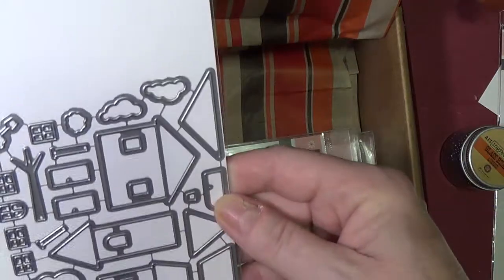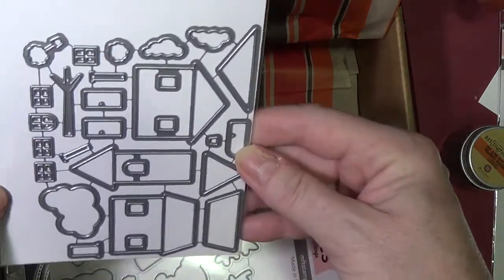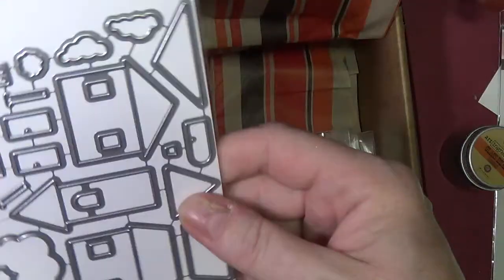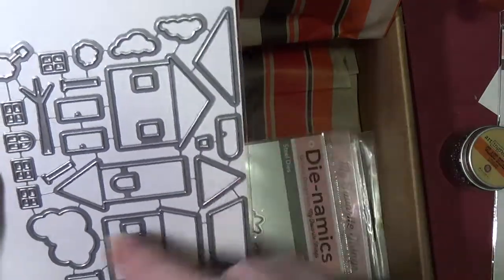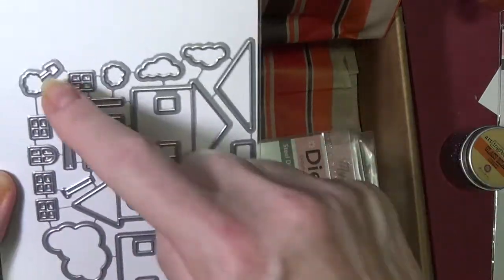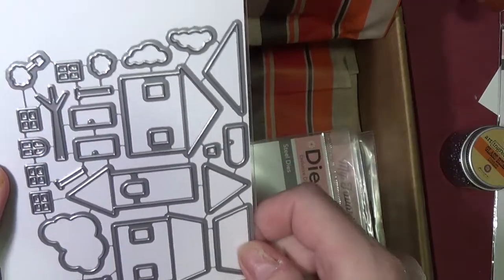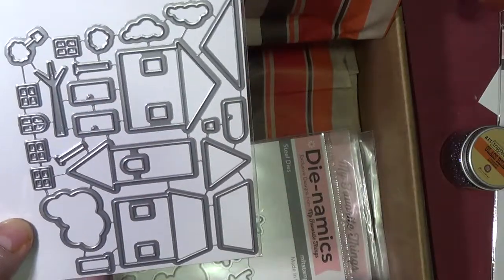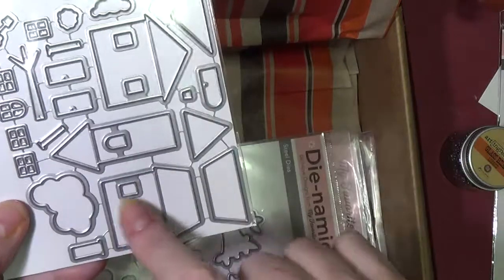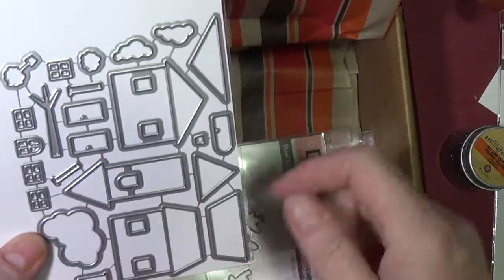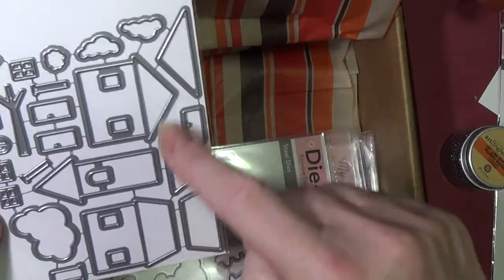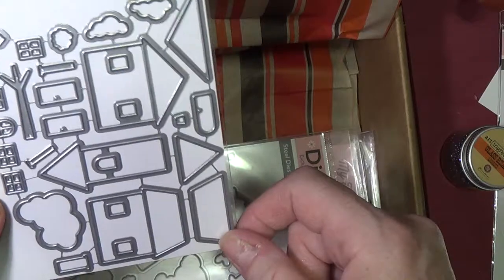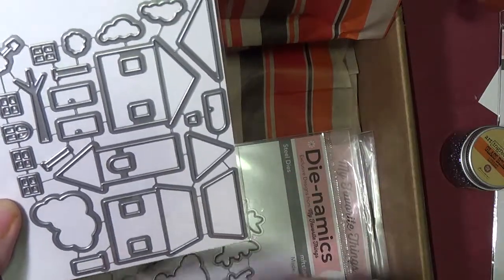And then I bought this one. These are standalone dies so they don't go with a stamp set. And this is called Home Sweet Home. So you've got clouds and you've got trees, different windows and doors, shrubs, the branches. Here's the doors here. And so this cuts the window and these would go over the top of them. And they have different roof lines, different houses, heights. And I think these might be chimneys.